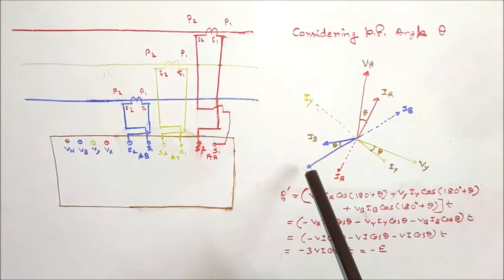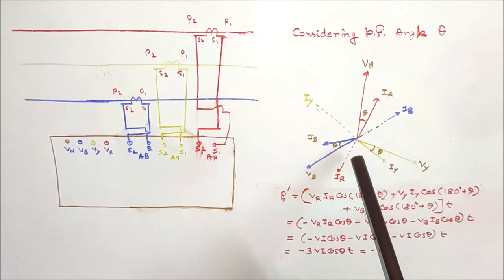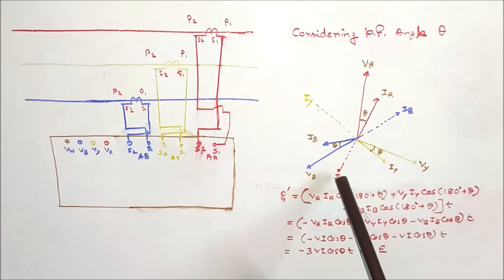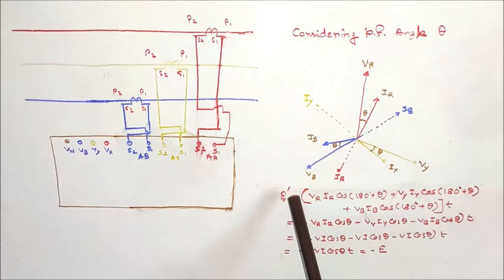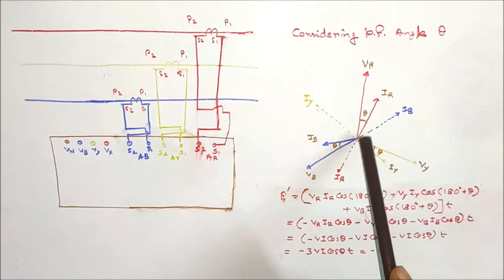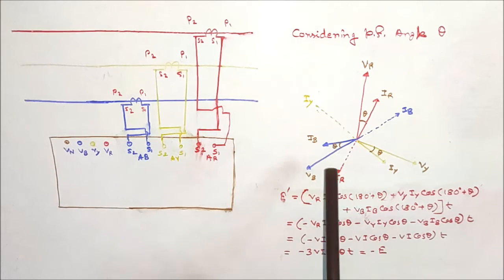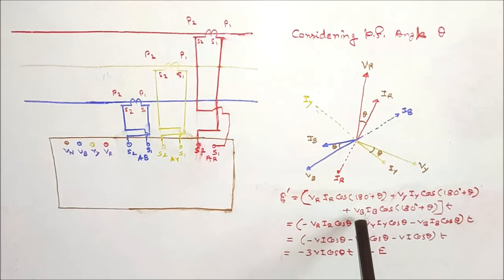The voltage phasors remain the same, but all current phasors — red, yellow, and blue — will be 180° apart from their original positions. The total energy reading E' equals the sum of three-phase power times T. Red phase power = VR·IR·cos(180°+theta), yellow phase = VY·IY·cos(180°+theta), and blue phase = VB·IB·cos(180°+theta), times T.